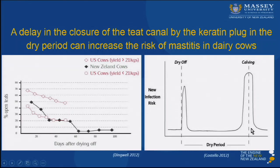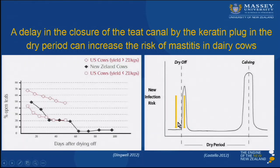There is also elevated infection risk again around calving. The question is: is there any difference or relationship between the teat canal during lactation, at the end of lactation, and the teat canal in the dry period? Is there any change before and after dry-off that can increase the risk for the cow to get mastitis?